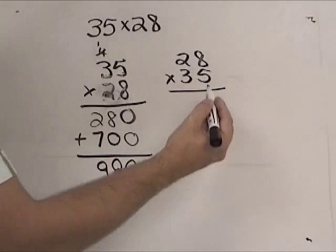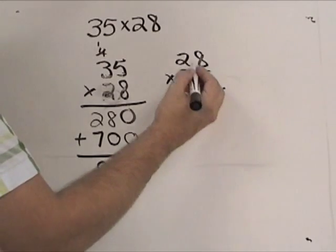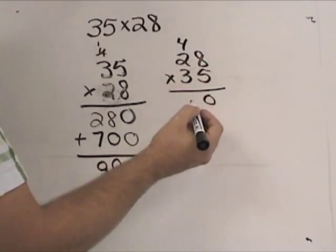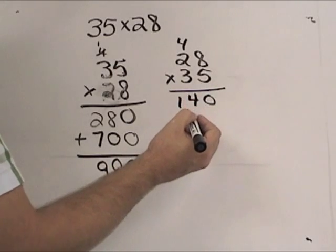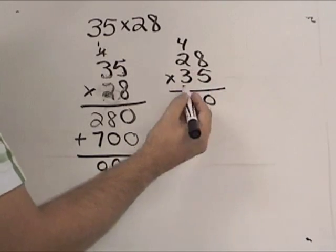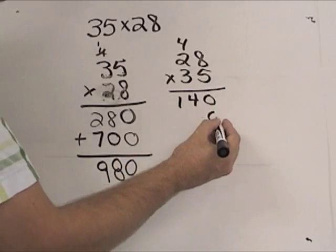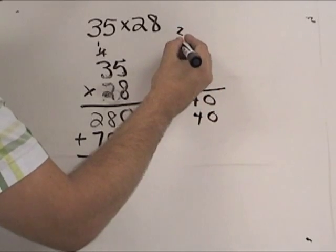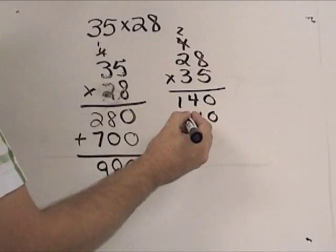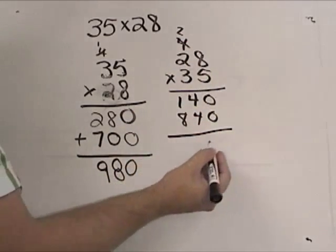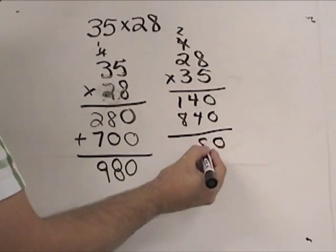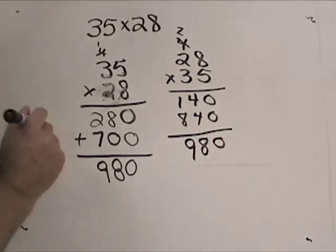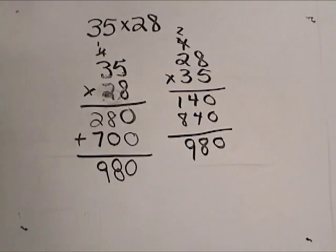And just to quickly show you, if I were to do the same thing here, 3 times 8 is 24. And 3 times 6 is 7, 8. So we would end up getting the same answer. So that is how you use the algorithm to multiply 2 by 2 number.